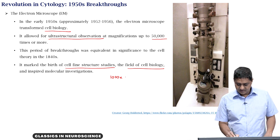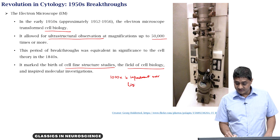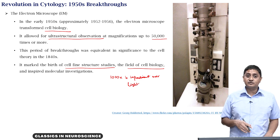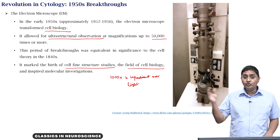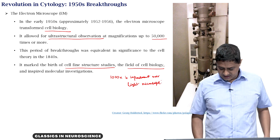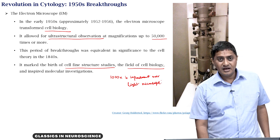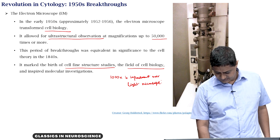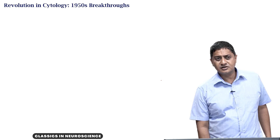To clarify: the 1000x figure is the improvement over light microscopy, not the magnification itself. 50,000x is the magnification of the electron microscope. This allowed observation of cell organelles using the electron microscope.